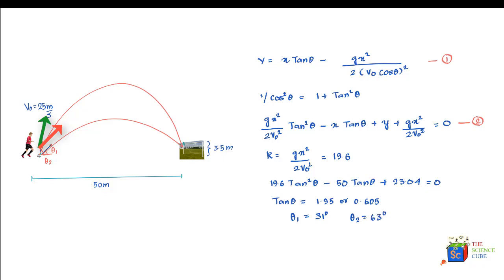What we learned from this question is that for a given range, you'll always have two angles—one smaller angle less than 45 degrees and one more than 45 degrees—which will give the same displacement in the horizontal direction.